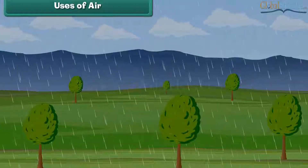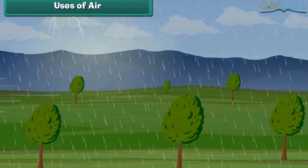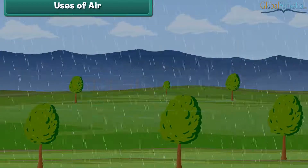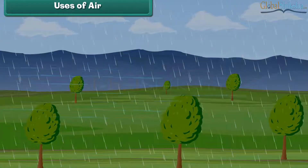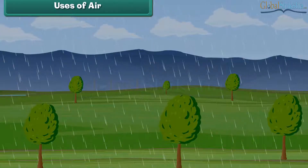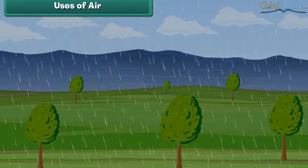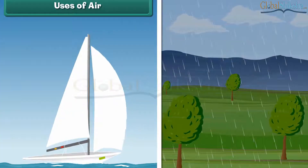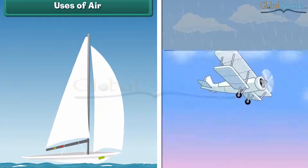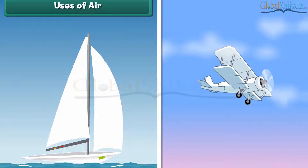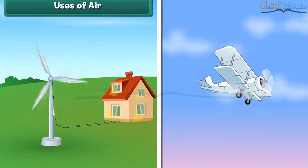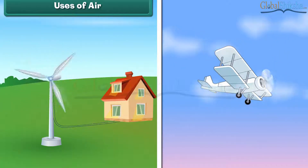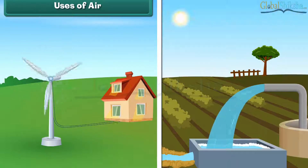Uses of air. Moving air is known as wind. Wind moves clouds and causes rain. Wind helps sailboats and gliders to move. The power of wind is used to generate electricity, and wind power also helps pump water.